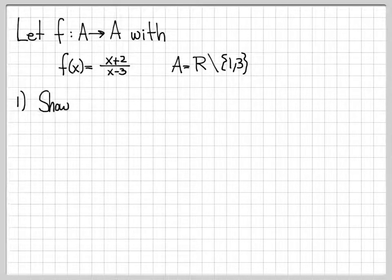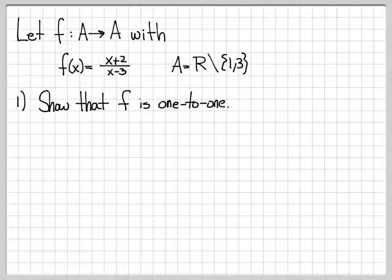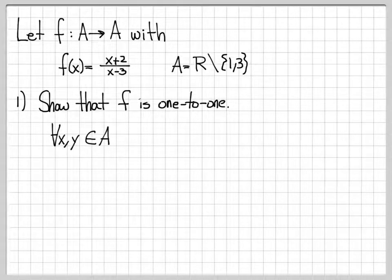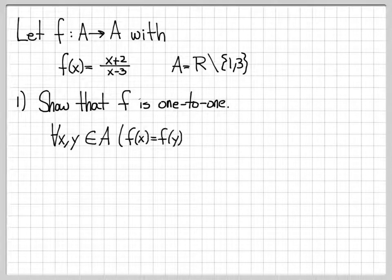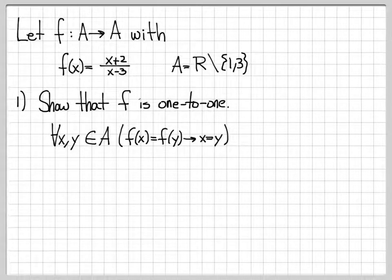In the first part, we're going to show that f is one-to-one. What does it mean for a function to be one-to-one? That means that for all x and y in the set A, whenever we have f(x) = f(y), this implies that x = y. That's what it means to be a one-to-one function.